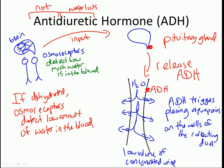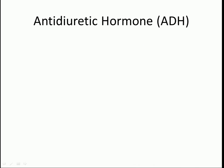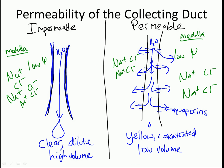In the reverse case, if you're very well hydrated, the osmoreceptors detect that water concentration is high and tell the pituitary gland there's no need to release ADH. No ADH means no aquaporins on the walls of the collecting duct, so the duct is impermeable to water. The water passes straight through, giving clear, dilute, high-volume urine — we can afford to lose a lot of water because we're so well hydrated.